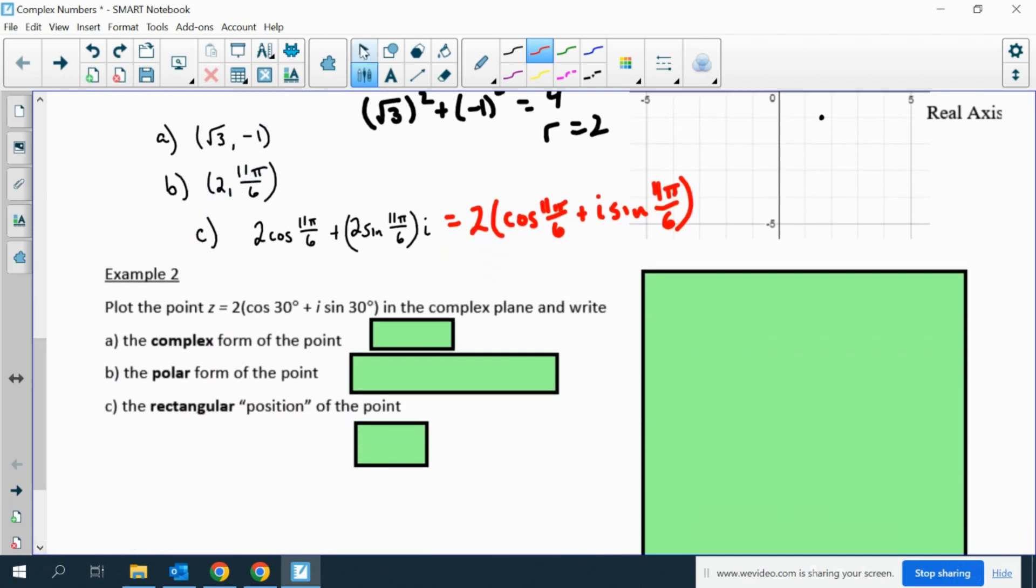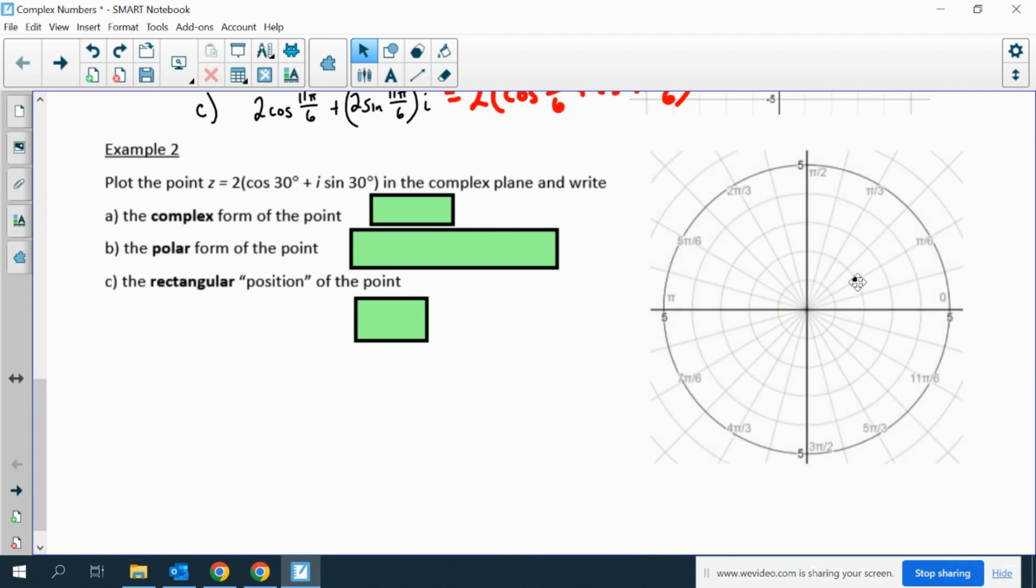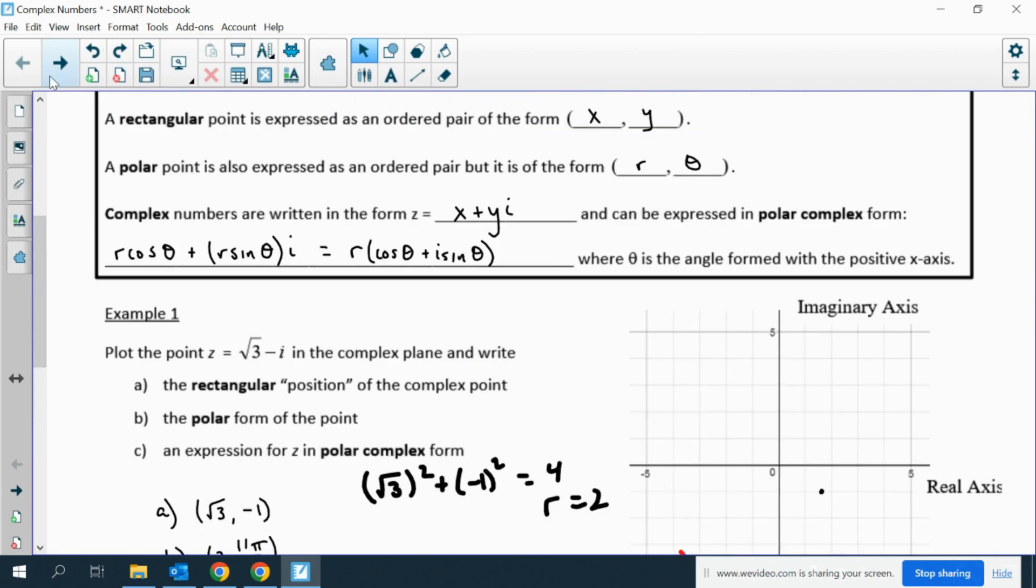Example 2: Plot this point in the complex plane and write all of the other forms. This is just a radius of 2 and at the angle 30, so that would be over here. The complex form of the point is root 3 plus i. The polar form of the point is 2, 30 degrees or 2, pi sixths. The rectangular position of the point would be root 3, 1. These are all things just using these forms up here.